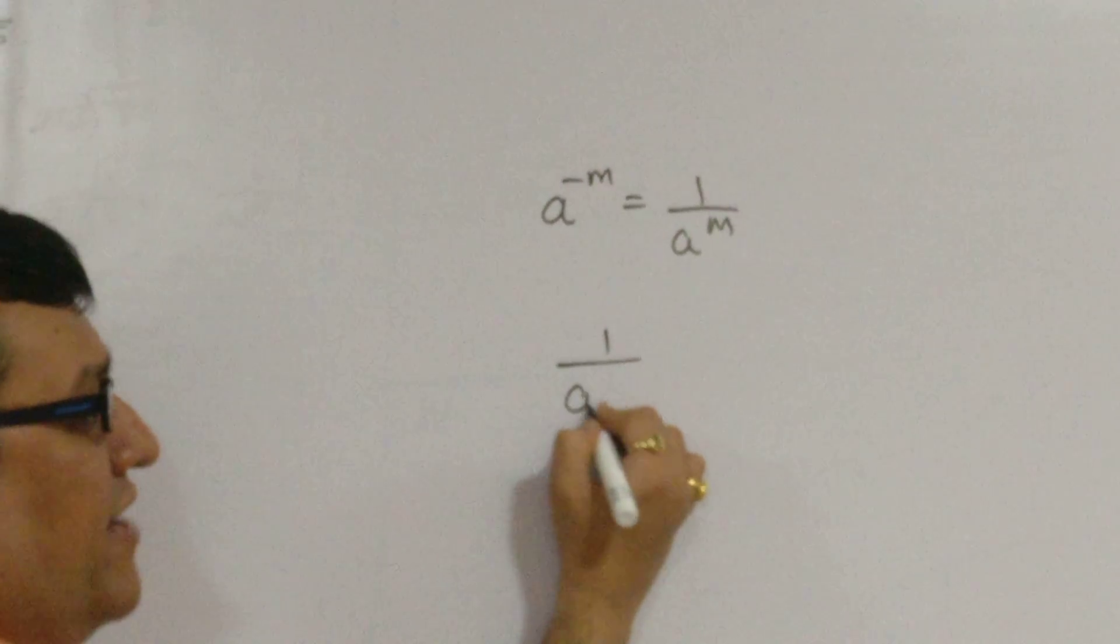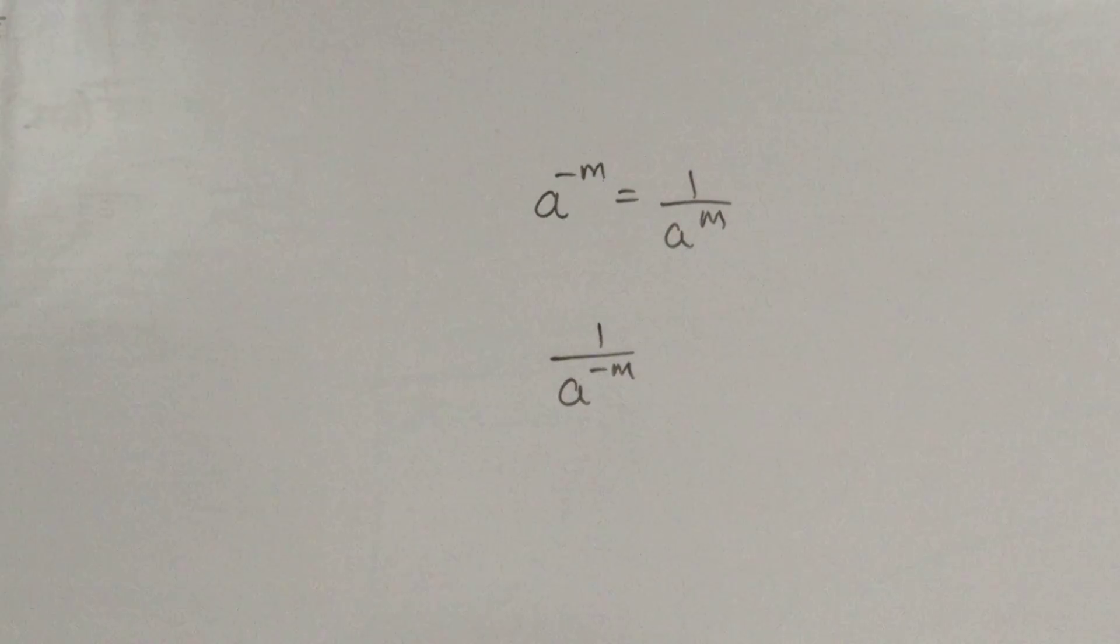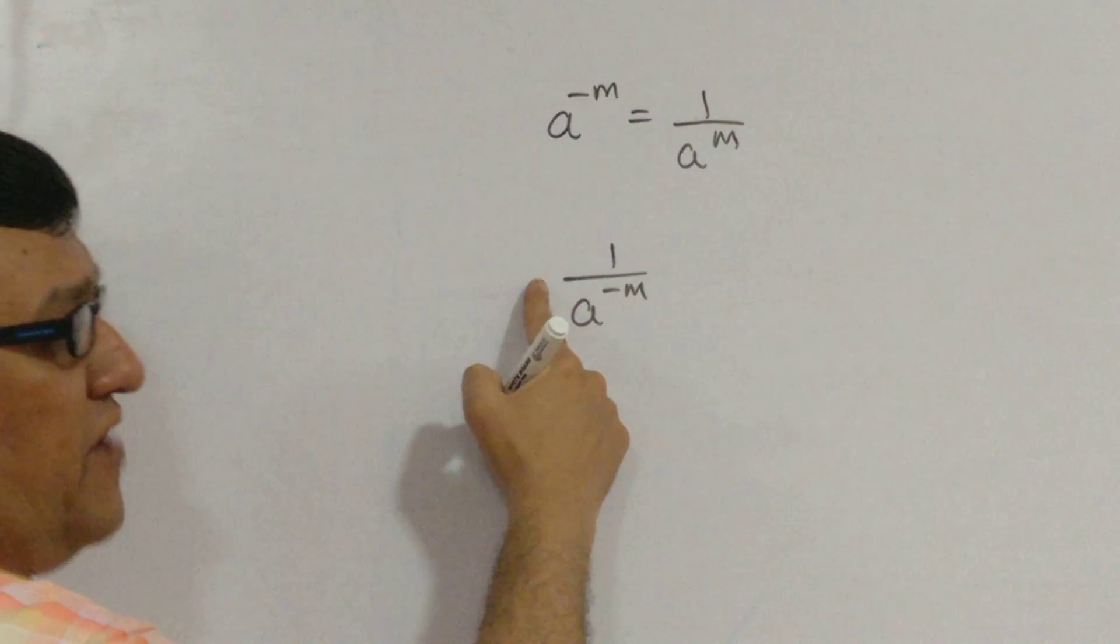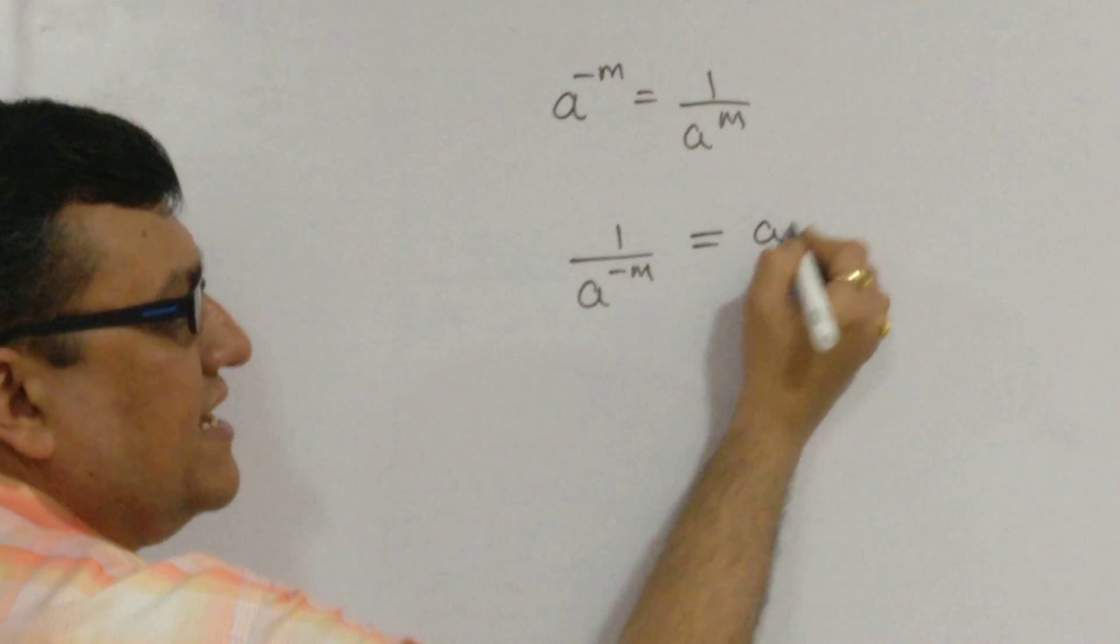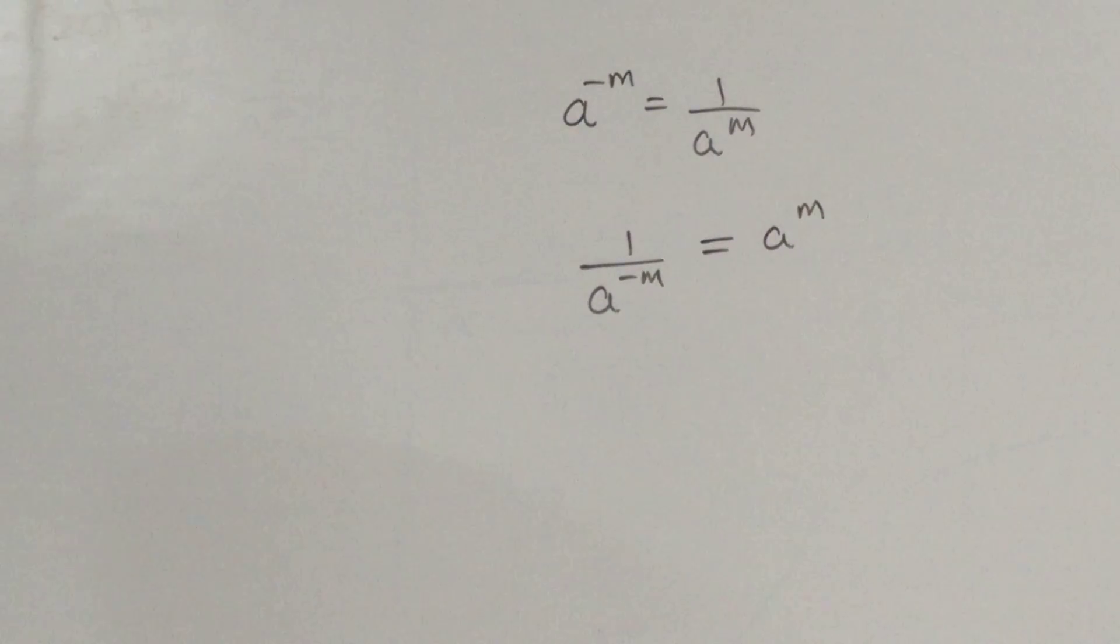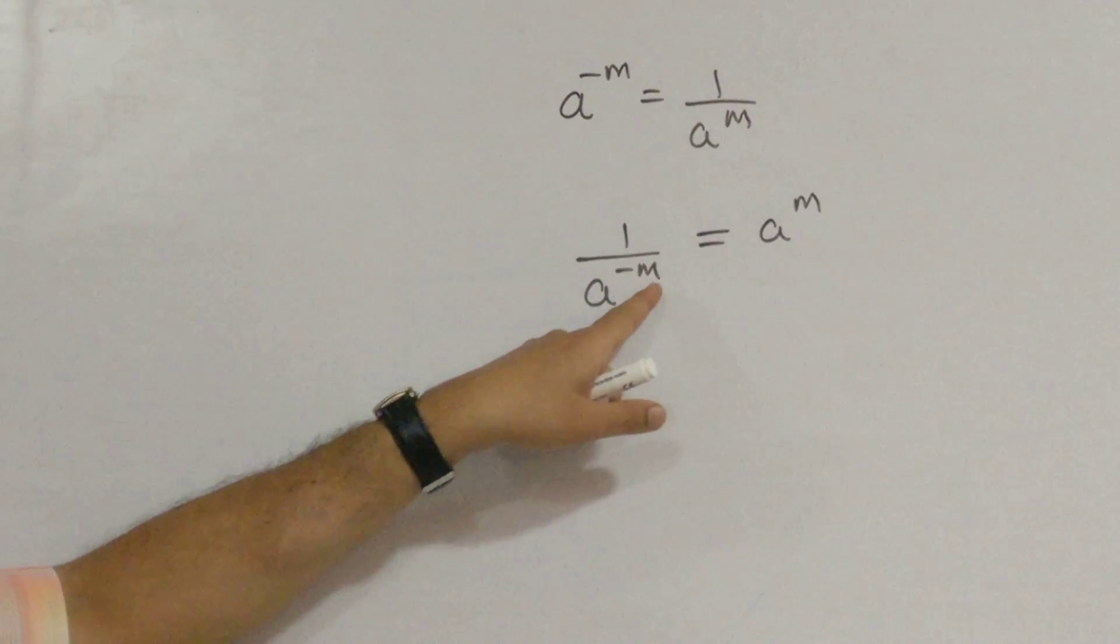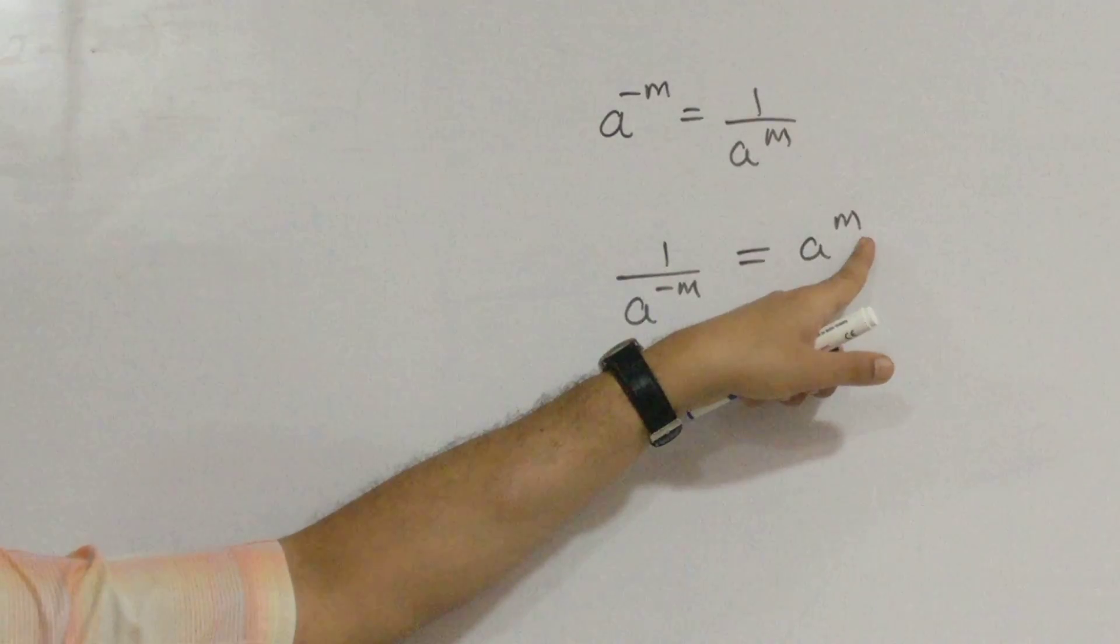Likewise, if we have 1 upon a raised to minus m, the same thing, if I apply, I get answer as a raised to m. 1 upon a raised to minus m can be written as a raised to m.